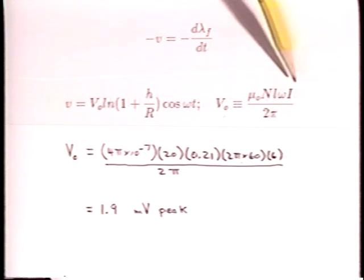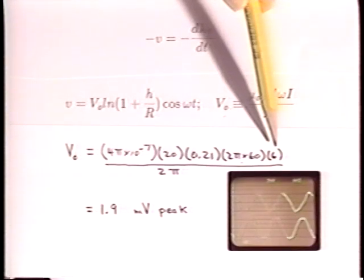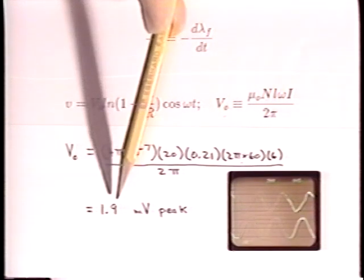The peak wire current is 6 amperes. Then V sub zero is 1.9 millivolts peak.